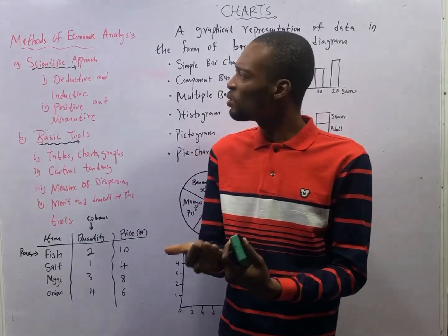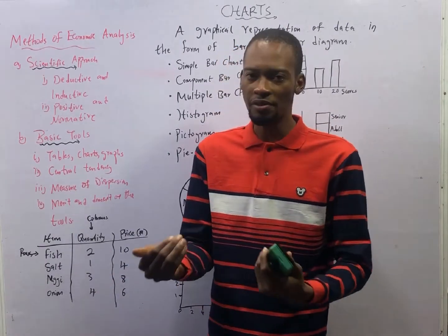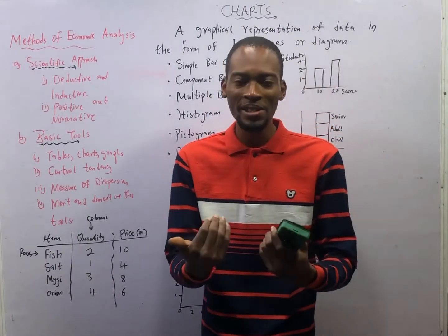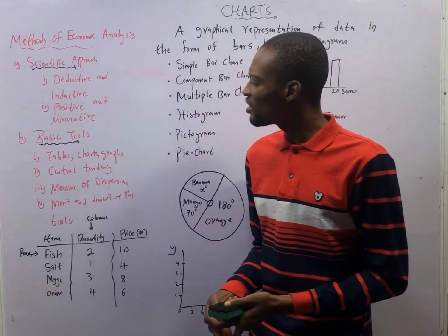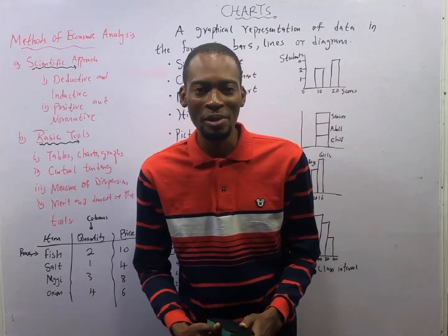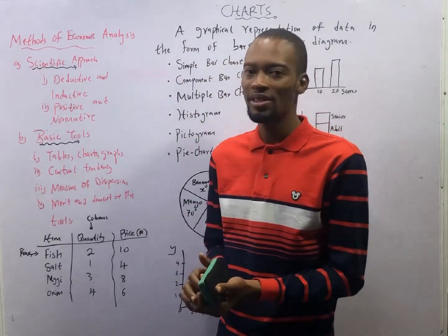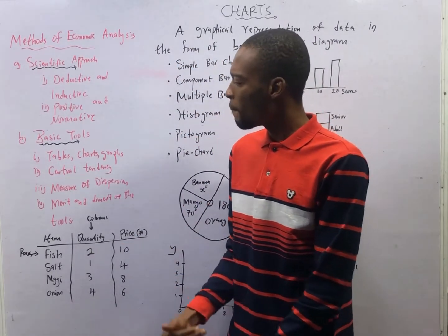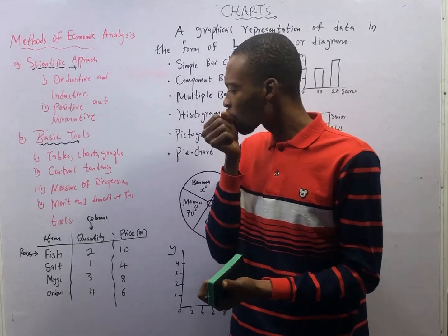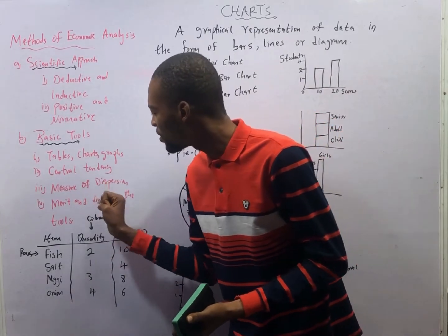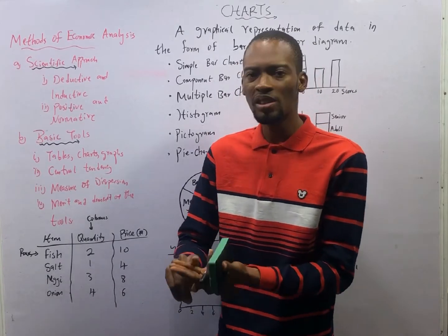We have been able to look at the scientific approach, deductive and inductive reasoning, positive and normative reasoning. And in the previous episode, I talked about basic tools used in economic analysis, including tables, charts, graphs, measure of central tendency — that is mean, median, and mode — measure of dispersion, that is range, mean deviation, standard deviation, and variance.